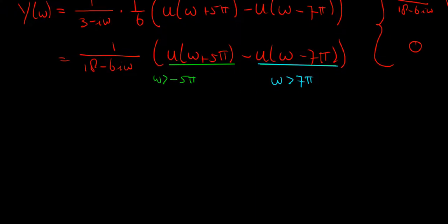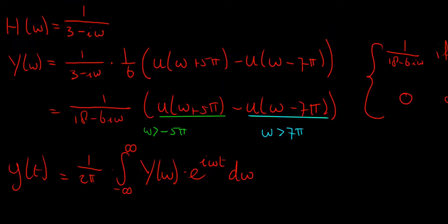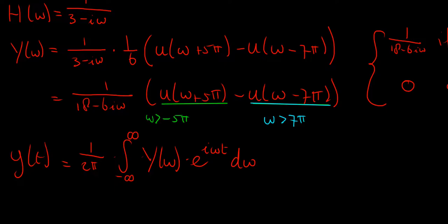We could calculate the output in the time domain by applying the inverse Fourier transform: 1/(2π) times the integral from negative infinity to infinity of Y(ω) multiplied with e to the power of iωt, dω. However, for now we are not going to do that, because we can do some neat things with these frequency-domain functions. That is where the next video will go — about filters: how we can choose which frequencies to let pass and which frequencies to remove.